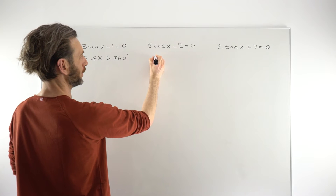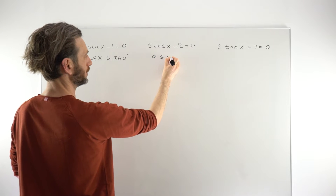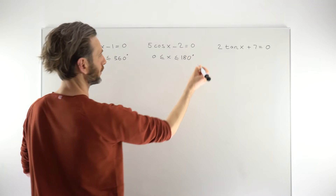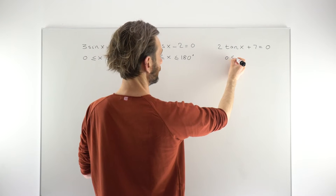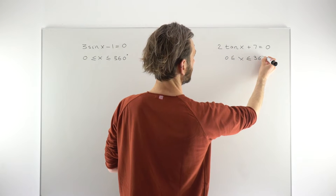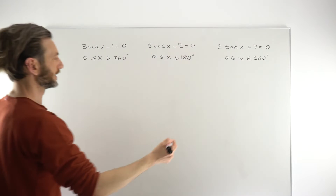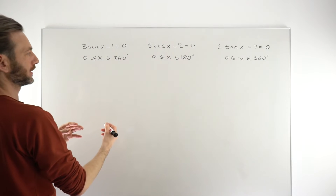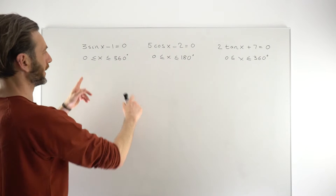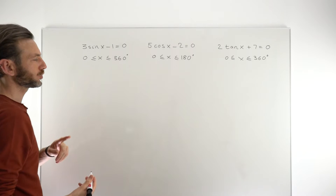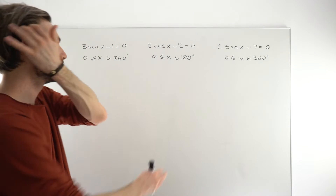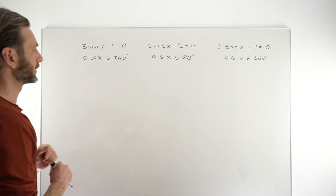For the first equation, the range is 0 to 360. For the second, we'll restrict it to 180 degrees. And the third, we'll run that out to 360 degrees again. These ranges could be anything — sometimes they go beyond 360 up to 720 or 540 — but 0 to 360 is your standard range, covering one cycle of the sine and cosine graph. The tan graph is a little different.